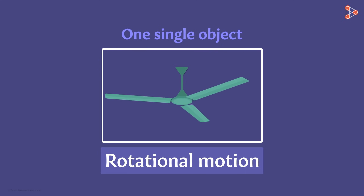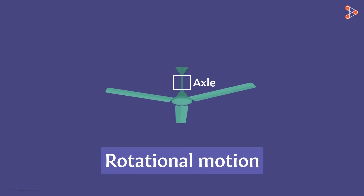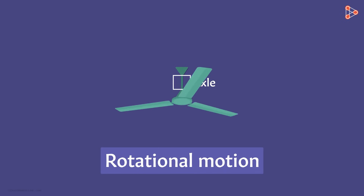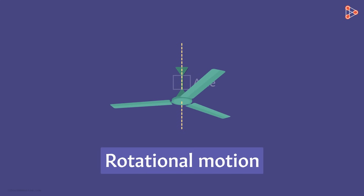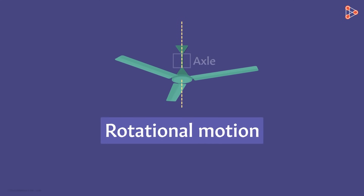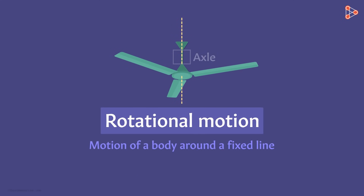The fan is undergoing rotational motion. Before defining this type of motion, let's try to understand it first. This rod here is called the axle, and the entire fan is spinning around this axle — or you can say the entire fan is spinning around this fixed line. A body is said to be performing rotational motion if it is spinning around some fixed line, and that fixed line is called the axis of rotation.